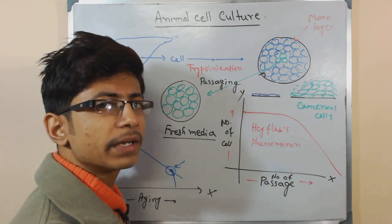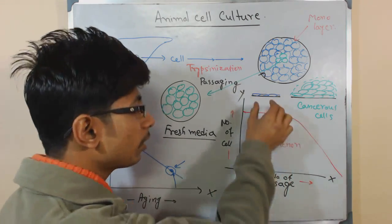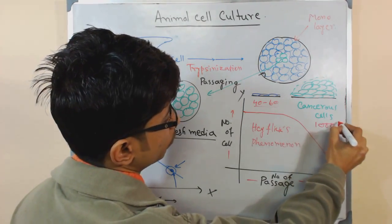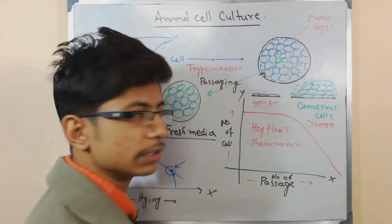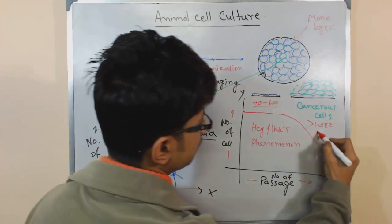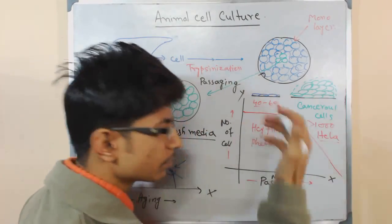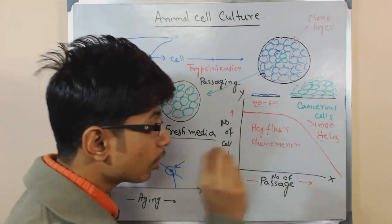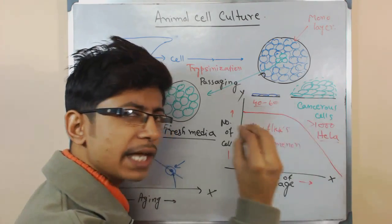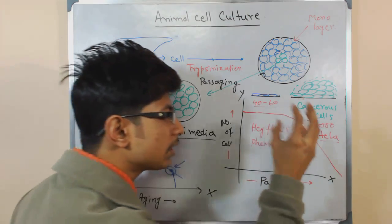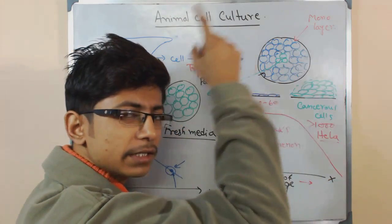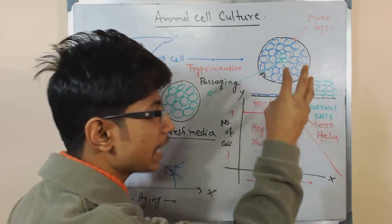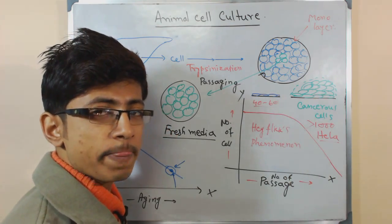For these continuous or immortal cell lines, the passage number is very high — in normal cells it is 40 to 60 maximum, but in immortal lines it can be a thousand or more. The HeLa cell line, for example, has already been cultured more than a thousand times and still shows no signs of aging or senescence, retaining the same properties as the very first culture.